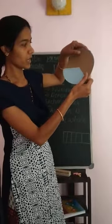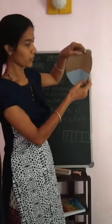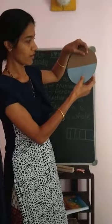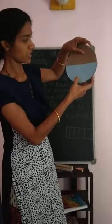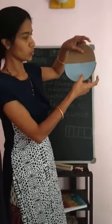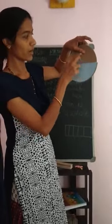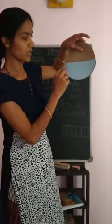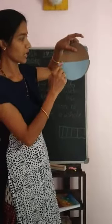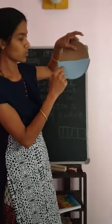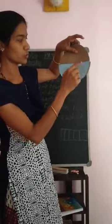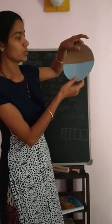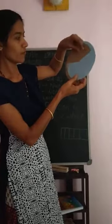Now I am taking like this. What is the fraction now? It is 2 by 4 — 2 shaded parts, 2 blue colors. And how many parts total? 1, 2, 3, 4. So 2 by 4.